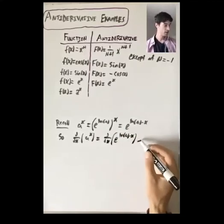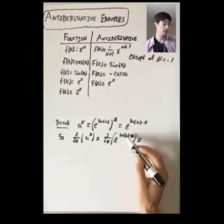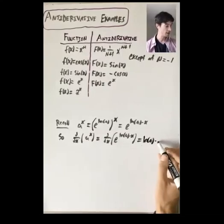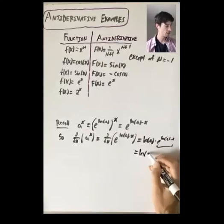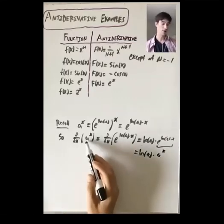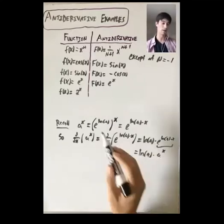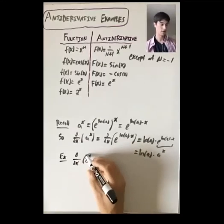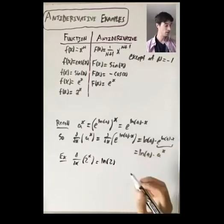What is this derivative? It's the derivative of e to the something, but then you need to apply the chain rule and take the derivative with respect to x of that something. So we get natural log of a times e to the natural log of a times x. And remember, this is just a to the x, so we get natural log of a times a to the x. So the derivative of 2 to the x is natural log of 2 times 2 to the x.